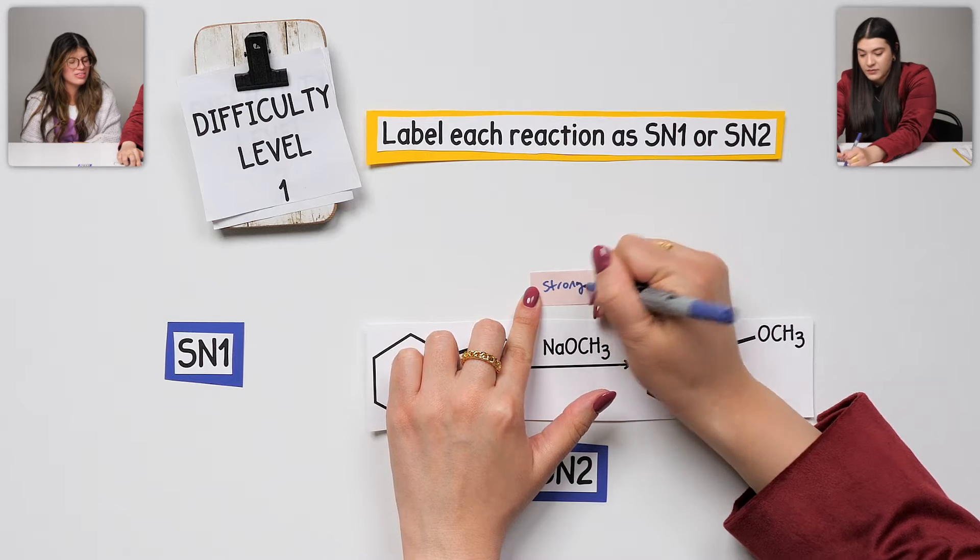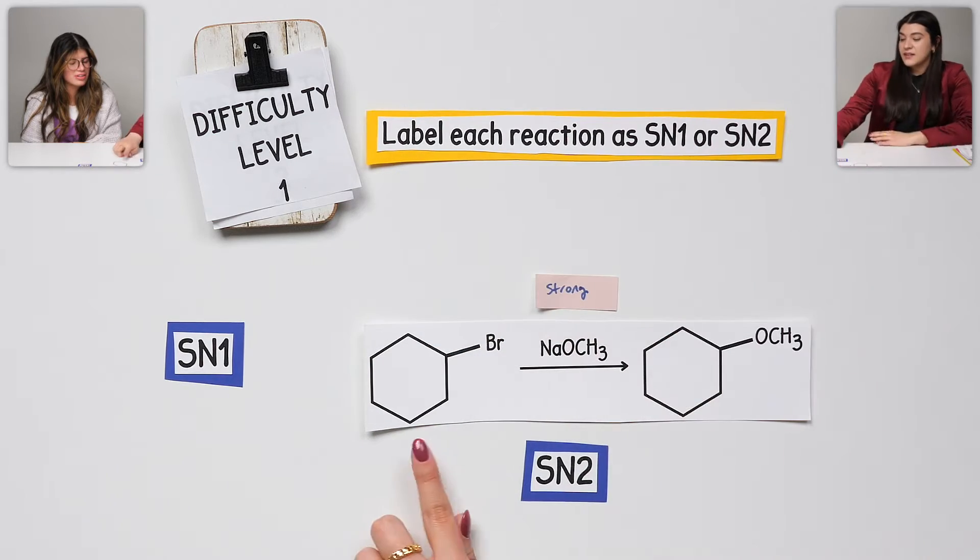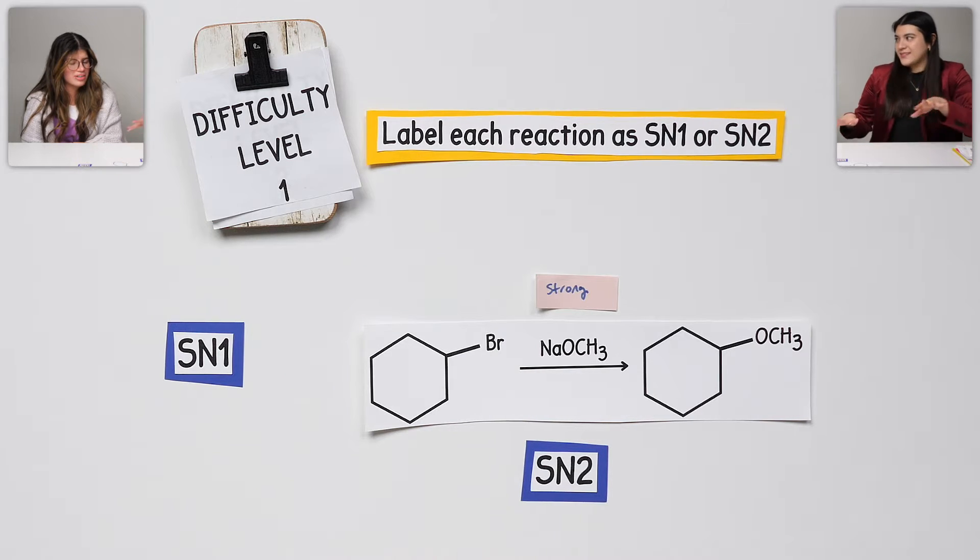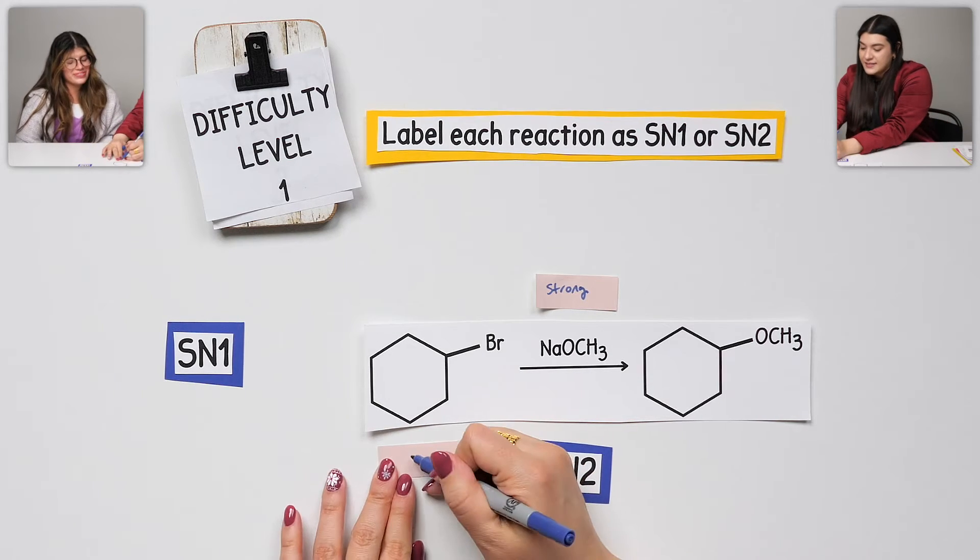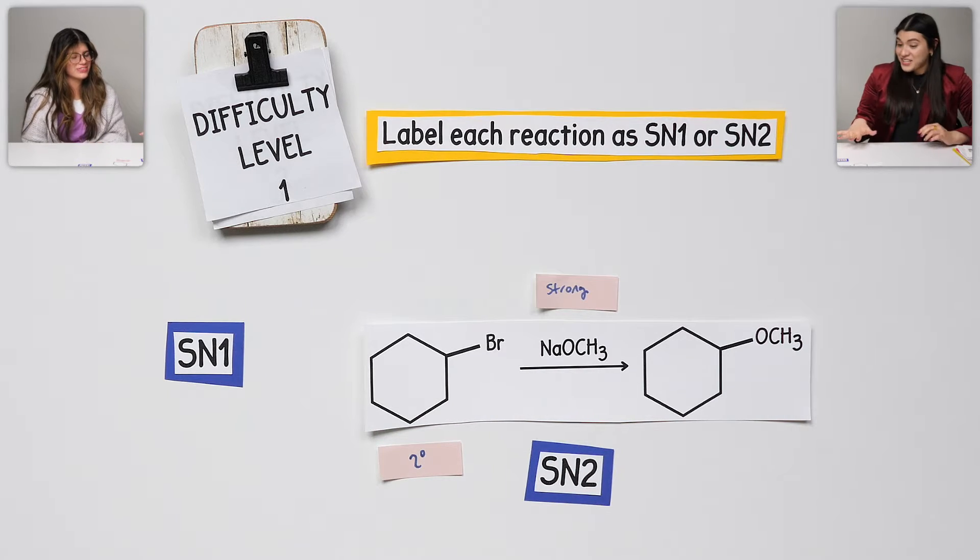Another thing that we could look at is the alkyl halide that we started off with. What kind is it? How would we classify that? Secondary. Good. So I can look at it and see that this is secondary.